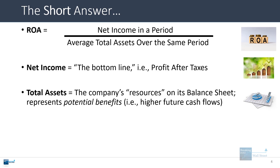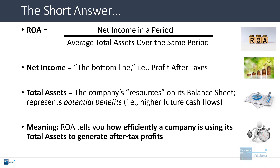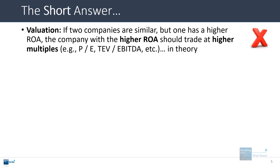There's no strict definition of an asset, but generally it represents something that could deliver potential future benefits to the company, such as cash inflows or potentially a higher valuation in the future. ROA tells you how efficiently a company is using its total assets to generate after-tax profits. So if two companies are similar but one has a higher ROA than the other, then the company with the higher ROA should, in theory, trade at higher multiples.